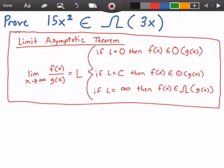And if our limit L is equal to C, where C is some constant value, then f of x belongs to big theta of g of x. And if our limit L is equal to infinity, then our function f of x belongs to big omega of g of x. So let's go ahead and get started.